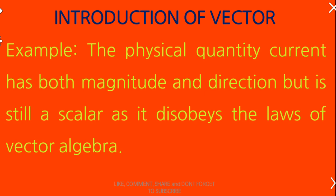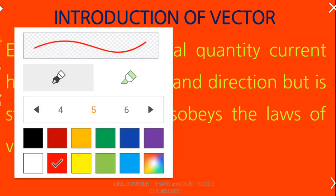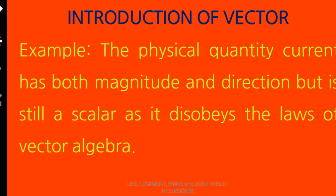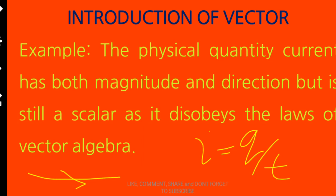Electric current is one of the fundamental physical quantities. You can measure electric current using an ammeter and it is due to the flow of charges in a conductor, given by I = Q/T. Electric current has a direction — it always moves from positive to negative terminal — and it has magnitude, e.g., 30 amperes. But it is not a vector quantity because it will not obey the laws of vector algebra.